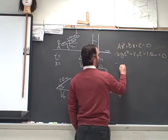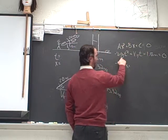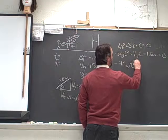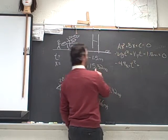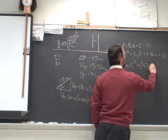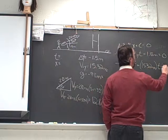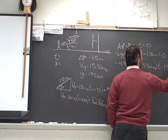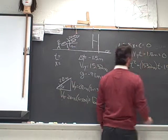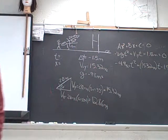We have negative 4.9 meters per second squared, that's one-half of g times t squared, plus our 15.32 meters per second times time, minus 1.5 meters equals zero. So I'll let you look at that. And that describes what our problem is going to look like as we solve it quadratically.